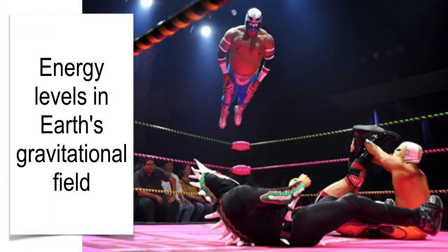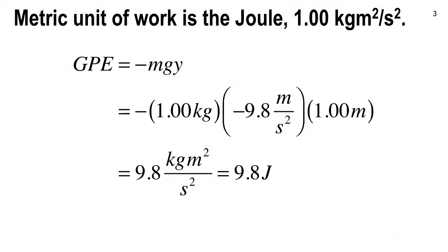I want to talk about some stuff here to review from last week about energy levels in Earth's gravitational field. If you look at this picture of these wrestlers, that is the coolest shot. Those other guys are probably thinking they're about to get blazed up by this guy. That's what you call a flying body slam. But we're going to do some energy level work here today before we get into chapter five.